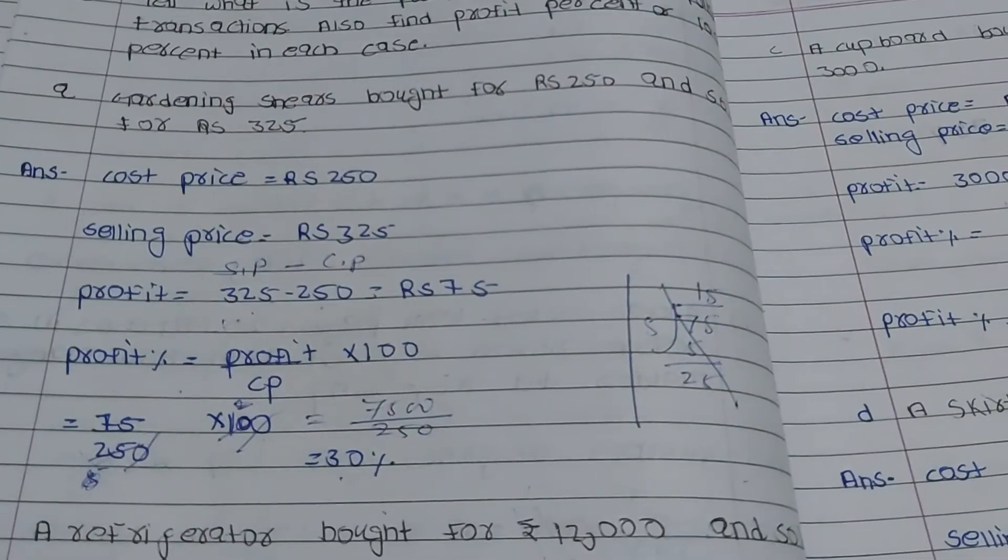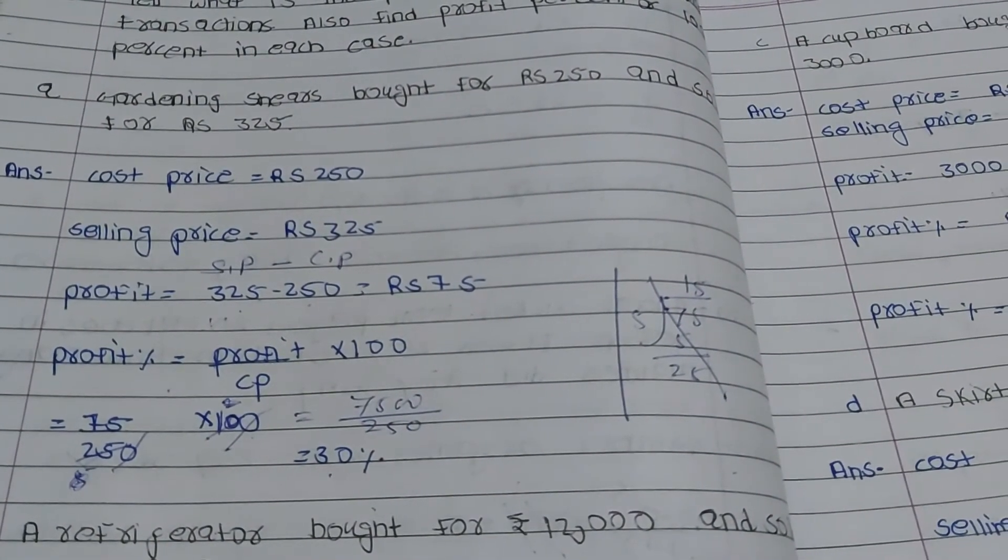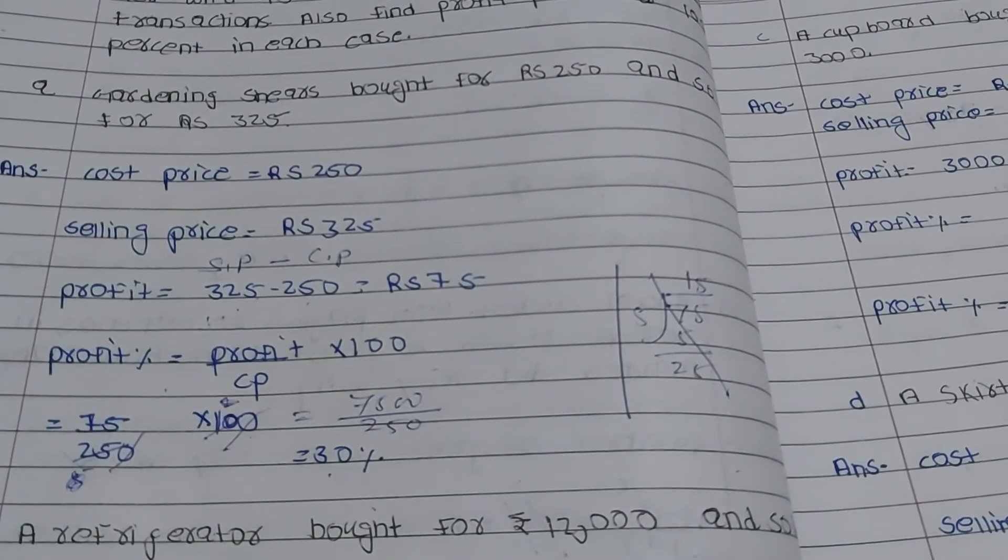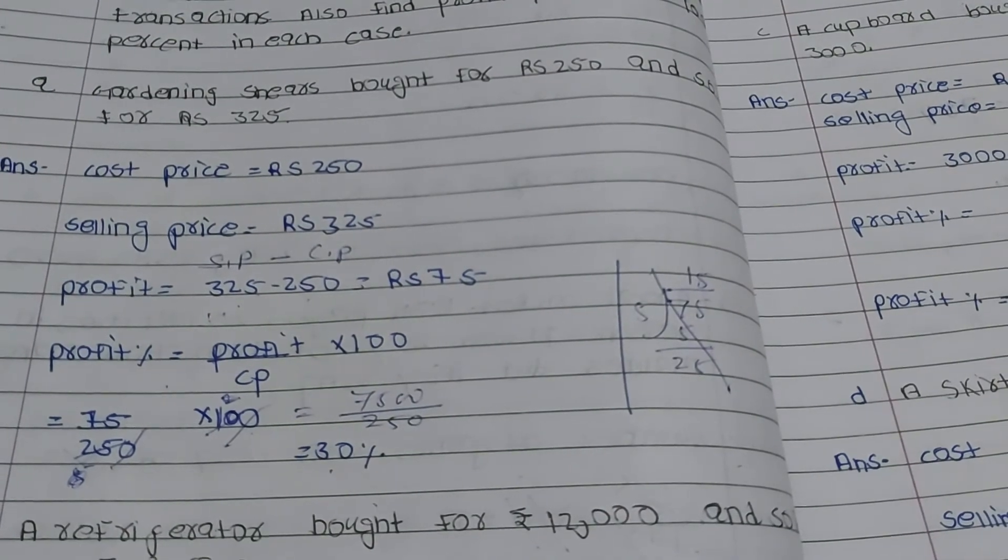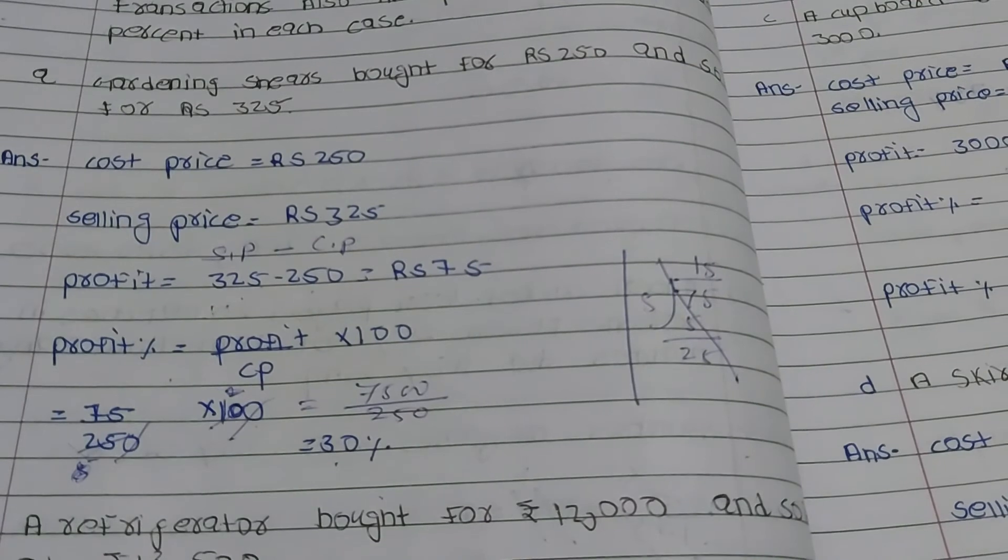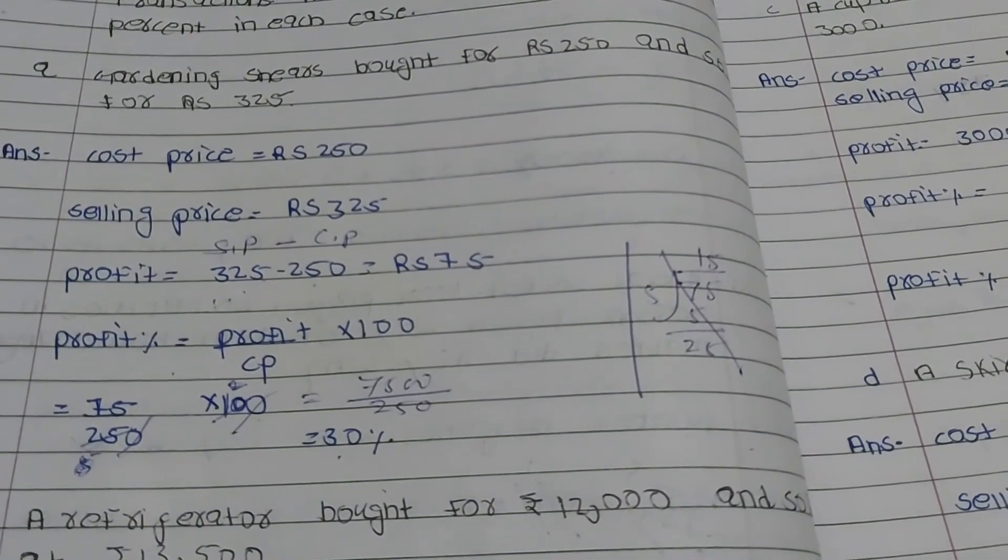Here we will understand price related to an item in buying or selling. The buying price of any item is known as its cost price, written in short as CP. The price at which you sell is known as the selling price, or in short we can write SP.